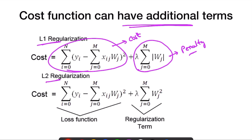So the cost function has an additional term along with the original cost value, whereas the loss function does not have any additional term — it is just the difference between the actual and the predicted values.